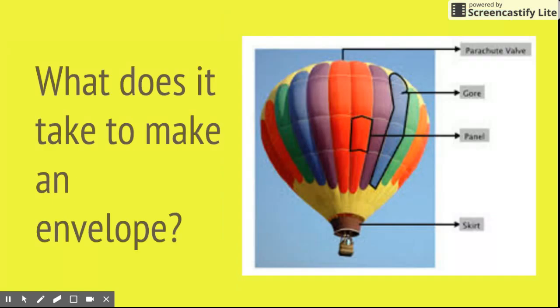What does it take to make an envelope? To make an envelope, individual panels are sewn together to make gore panels. These seams provide strength and rigidity on a horizontal plane. The gore panels are then sewn together vertically. Once sewn together, the shape of the envelope takes place.